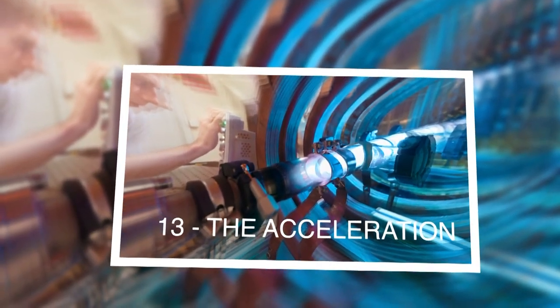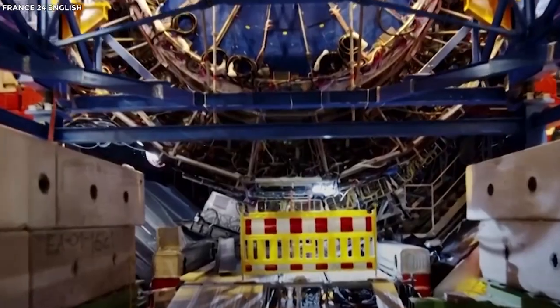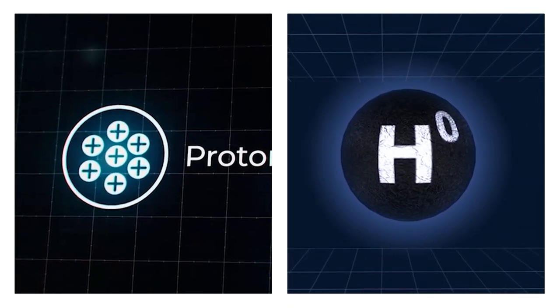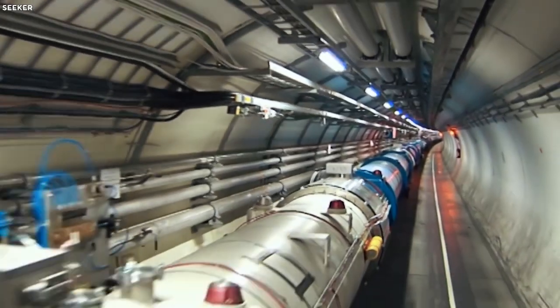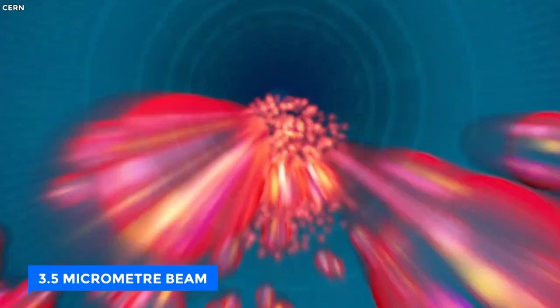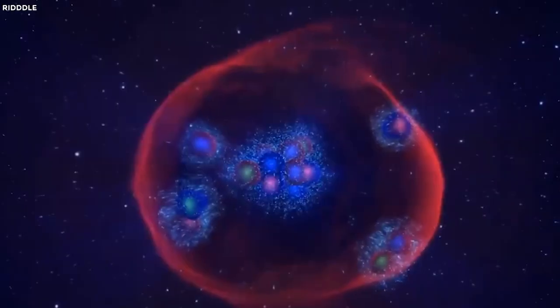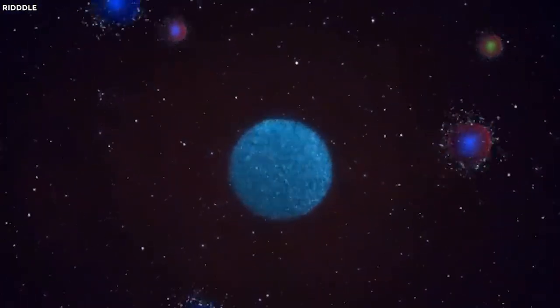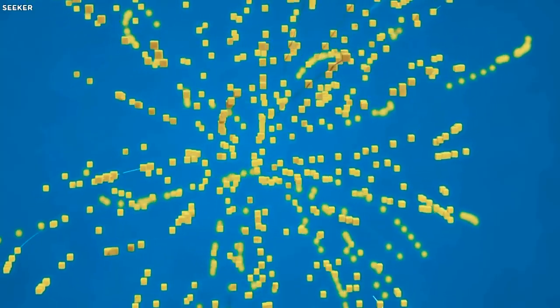The Acceleration. The LHC's acceleration process commences with procuring protons from ordinary hydrogen at CERN. Despite the LHC's impressive proton packs, boasting a hefty 115 billion protons per bunch, tightly packed within a minuscule 3.5 micrometer beam, the actual amount of hydrogen accelerated daily is astonishingly modest, a mere 2 nanograms.